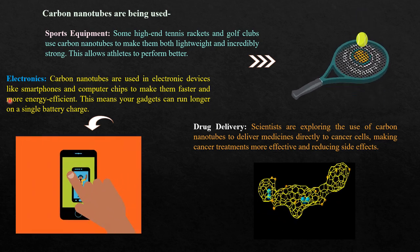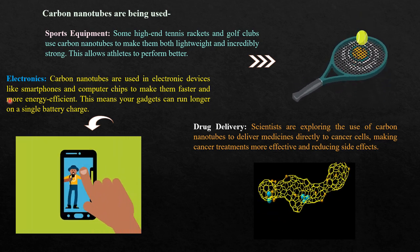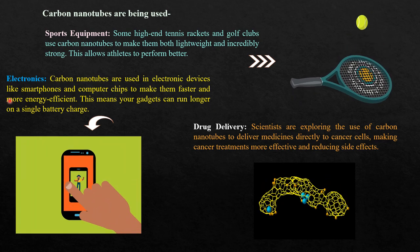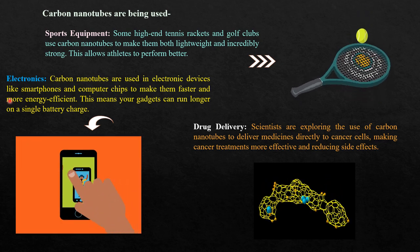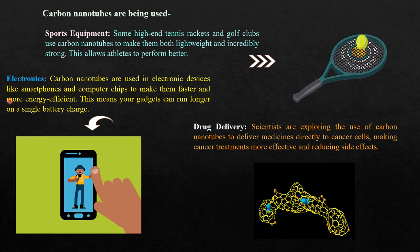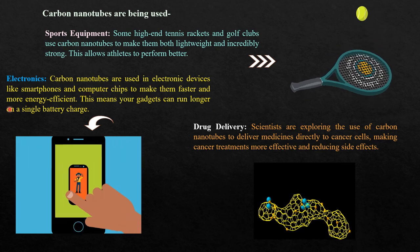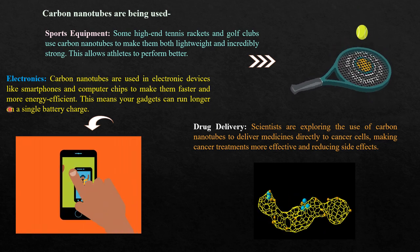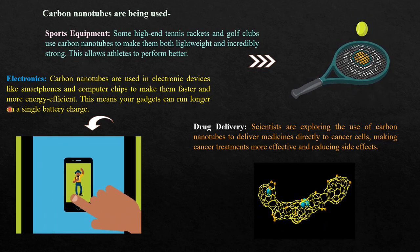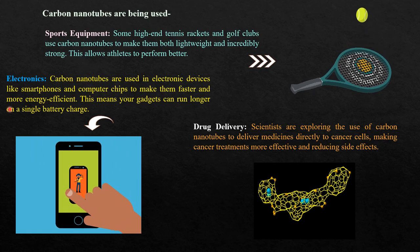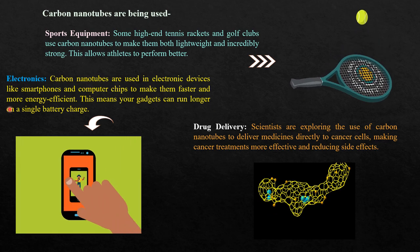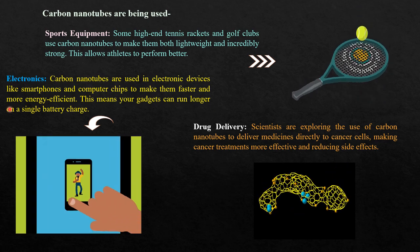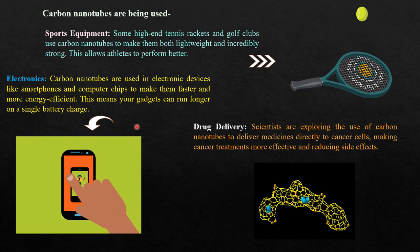In electronics, carbon nanotubes are used in electronic devices like smartphones and computer chips to make them faster and more energy efficient. Because of their energy storage capability, your gadgets can run longer on a single battery charge.